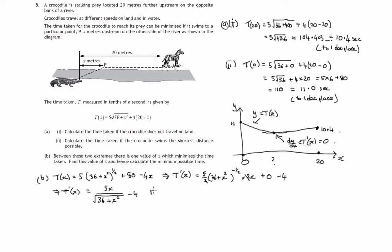Therefore, for stationary points, which is what we're hunting, we set that gradient, t dashed x, the derivative, equal to 0. That means we've got 5x over the square root of 36 plus x squared minus 4 equals 0. Let's add 4 to both sides and we'll get that fraction being equal to 4. Let's multiply both sides by the square root of 36 plus x squared to get rid of that fraction. So we'll have 4 times square root of 36 plus x squared.